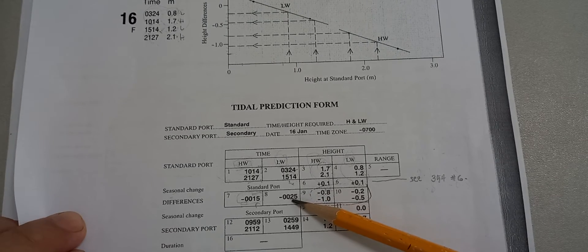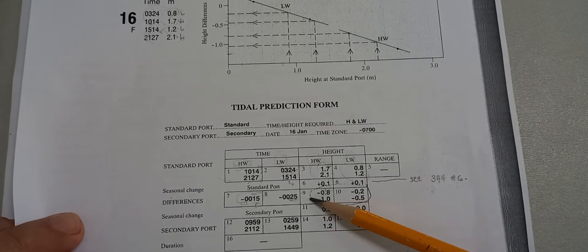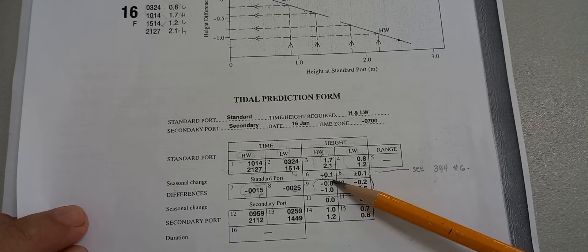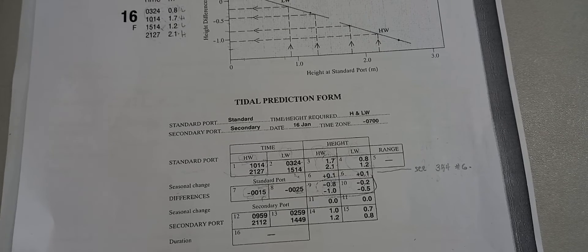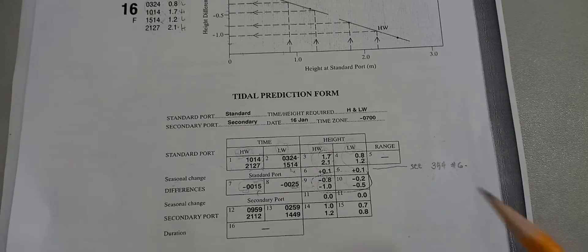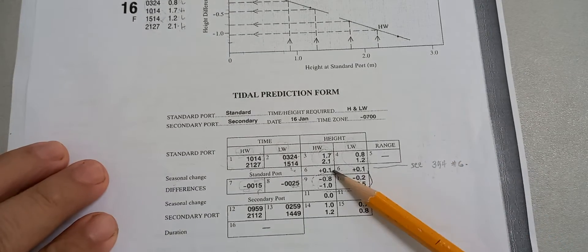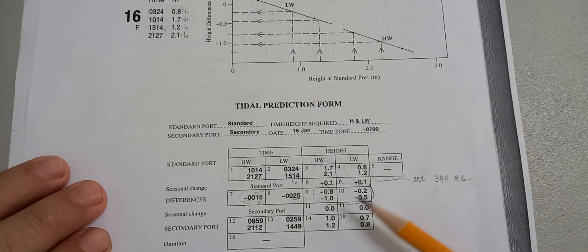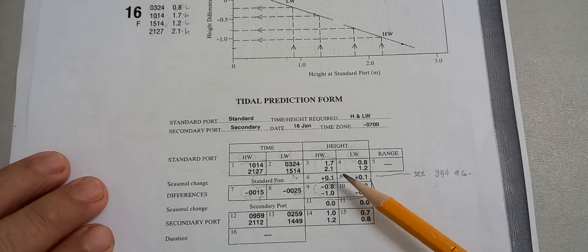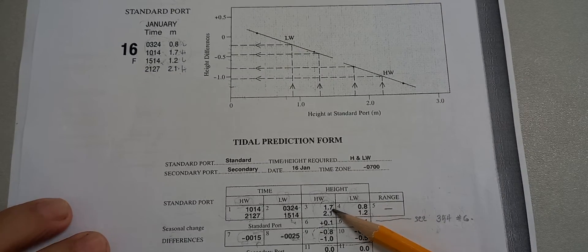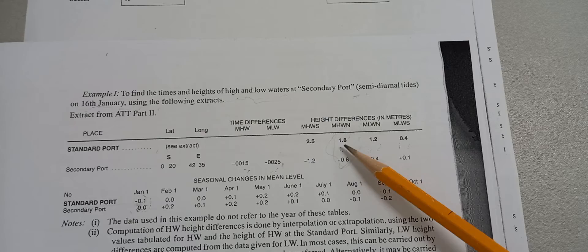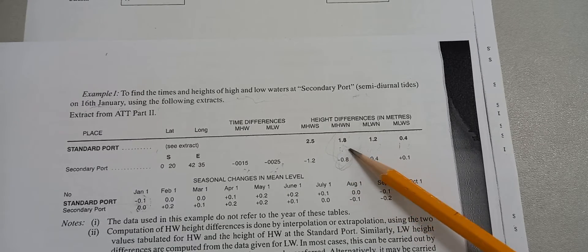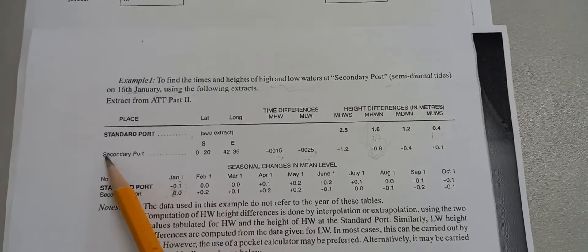That's 25 minutes for box eight. Now for boxes nine and ten, you need to interpolate. We need to interpolate because there is no direct value available. For the high water height of 1.7, checking the table there is no exact 1.7, but it is nearest to 1.8, so we can take negative 0.8 from the standard port correction table and put it there.